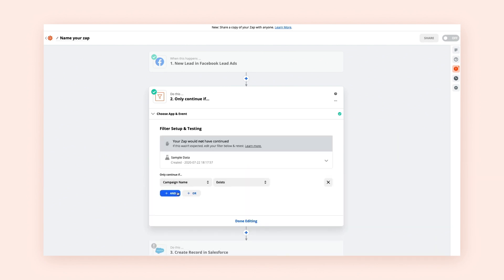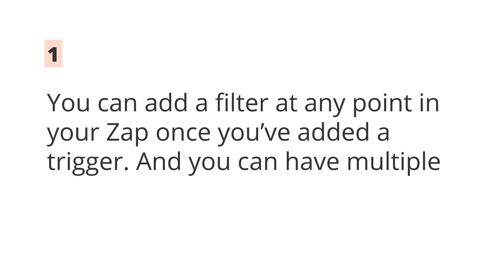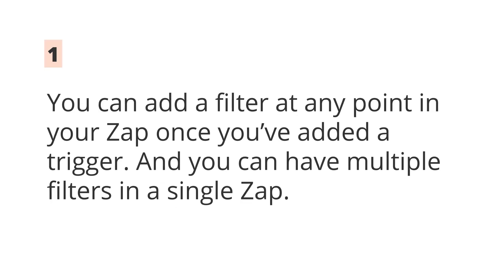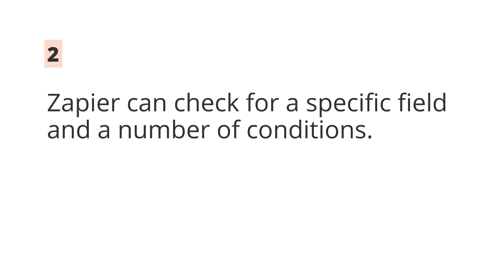And your team is now saving time. A few things to know about setting up a filter: you can add a filter at any point in your zap once you've added a trigger, and you can have multiple filters in a single zap. Zapier can check for a specific field and a number of conditions. You can add multiple conditions, and you can choose whether you want all the conditions to be true, or either one.